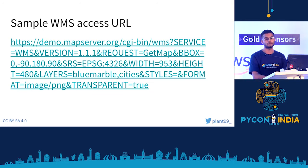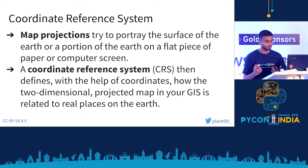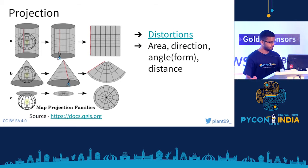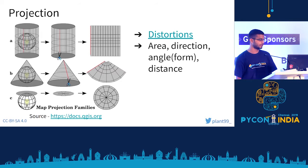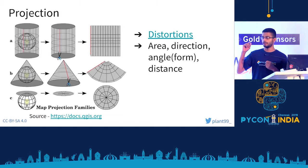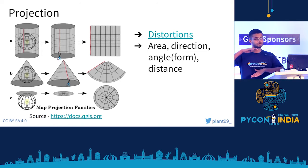Map projections try to portray the surface of the earth, or a portion of it, on a flat piece of paper or computer screen. The earth is a 3D shape, and projecting it onto paper requires different methods. In the first example, a light inside a sphere projects coordinates onto a surrounding surface. You roll it out and get a map. Other methods involve a cone, or two flat circular sheets on top and bottom.